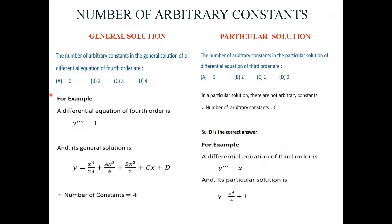Regarding the number of arbitrary constants: the number of arbitrary constants in the general solution of a differential equation equals its order. So a fourth-order differential equation will have four arbitrary constants in its general solution. However, in a particular solution, there are no arbitrary constants — we assign fixed values to all constants. So the number of arbitrary constants in a particular solution is always zero.